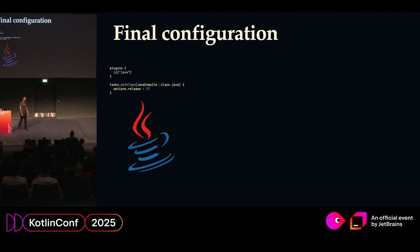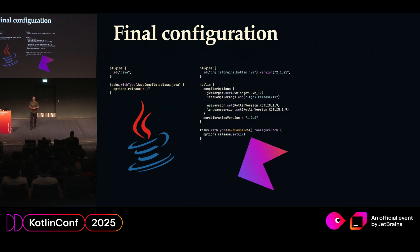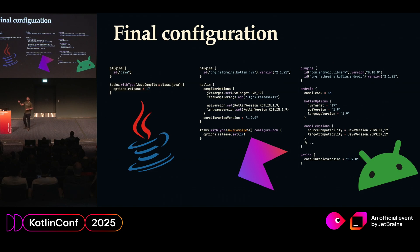To summarize: Java is relatively easy — always use the release flag. For Kotlin it gets more involved: you have Kotlin metadata used at compile time, so you need to set API version but also core library version. In the Kotlin DSL you can configure options on the task or in the Kotlin block, and there's a hierarchy where you can configure per compilation unit. For Android, you should not configure the release flag because Android has no Java version — it only has Compile SDK — but you still need to do all of this.